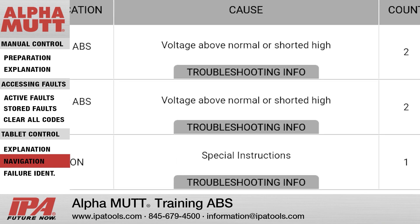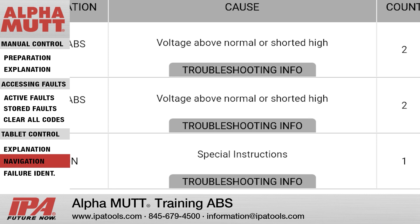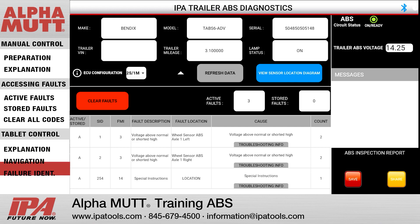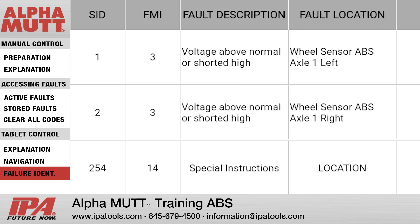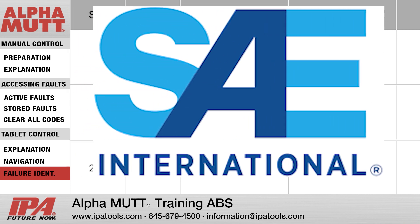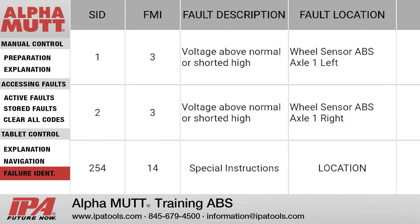Press Troubleshooting Info located in the Cause area to show additional information for each fault. Failure Mode Identifier Assignments: The Failure Mode Identifier (FMI) describes the type of failure detected in the subsystem identified by the PID or SID. The FMI and either the PID or SID combine to form a given diagnostic code. The remaining failure mode identifiers would be assigned by the SAE Truck and Bus Low Speed Communications Network Subcommittee, if additional common failure modes become detectable.